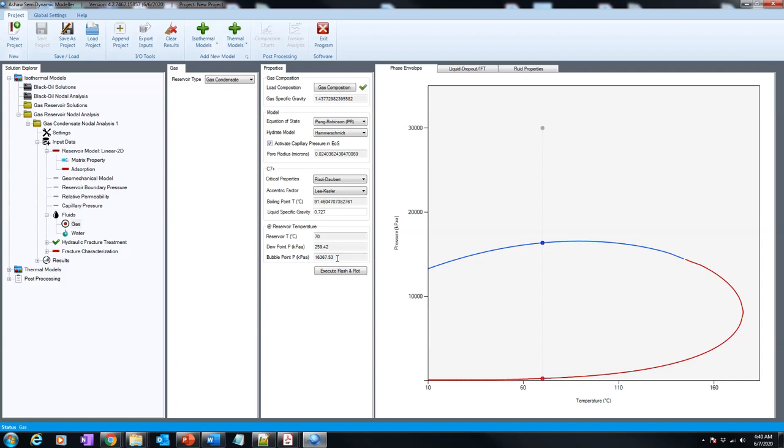You have to follow this pressure, which is 16,367 kPa. So now by clicking this, we see what's the new bubble point at this point is. We have to let the software run everything. Once you have the capillary pressure, it takes a bit longer. Now we see from 16,367, we have 100 kPa less at the bubble point because of the capillary pressure.